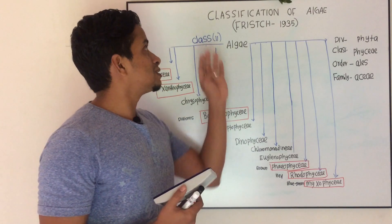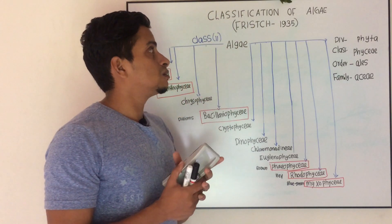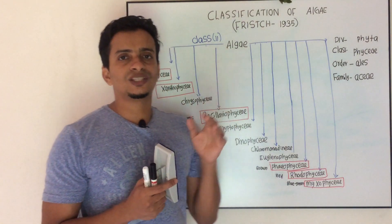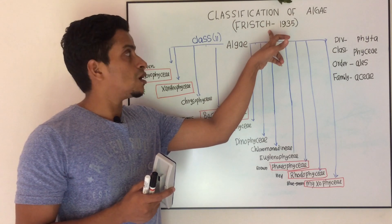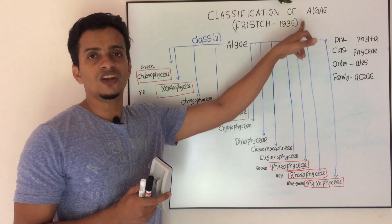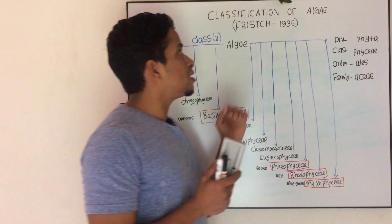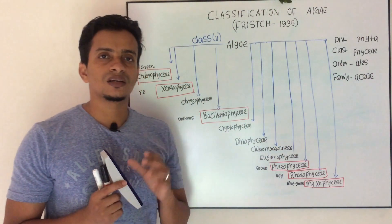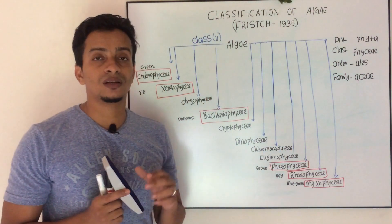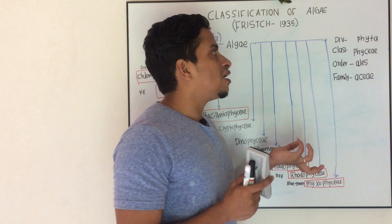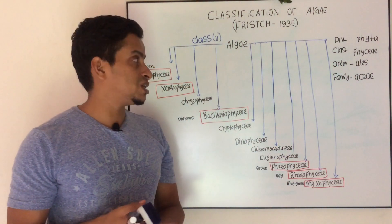We are discussing the classification of algae. This classification was proposed by Fritz in 1935. Before we enter into the topic, let us discuss some general features of classification and how names appear in classification.